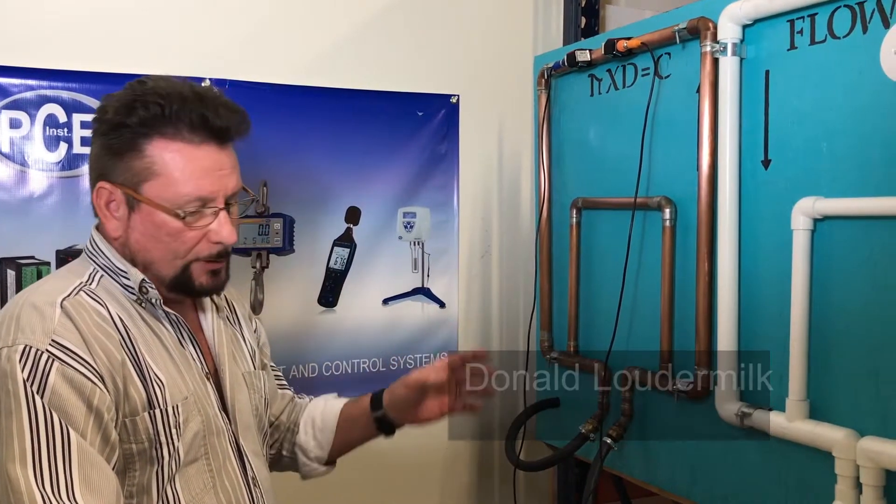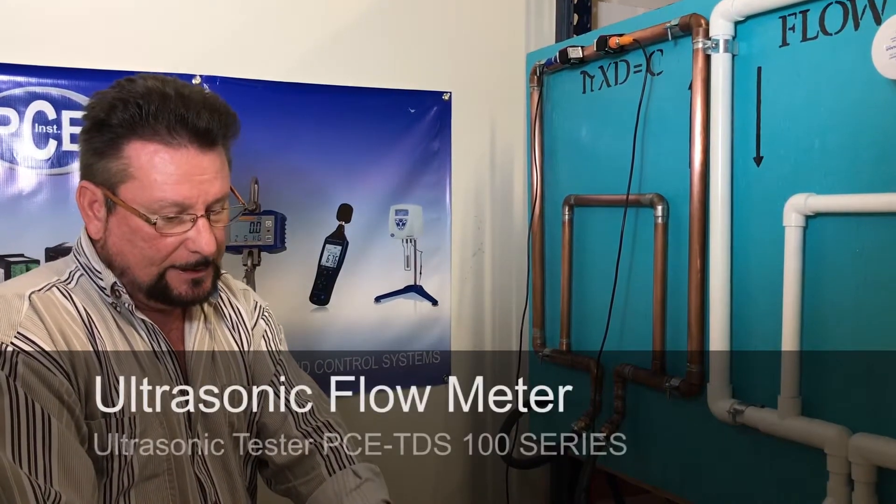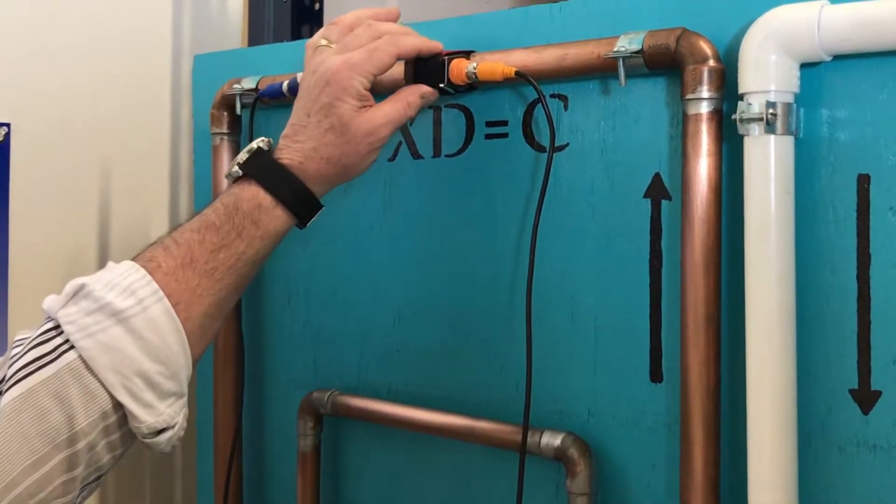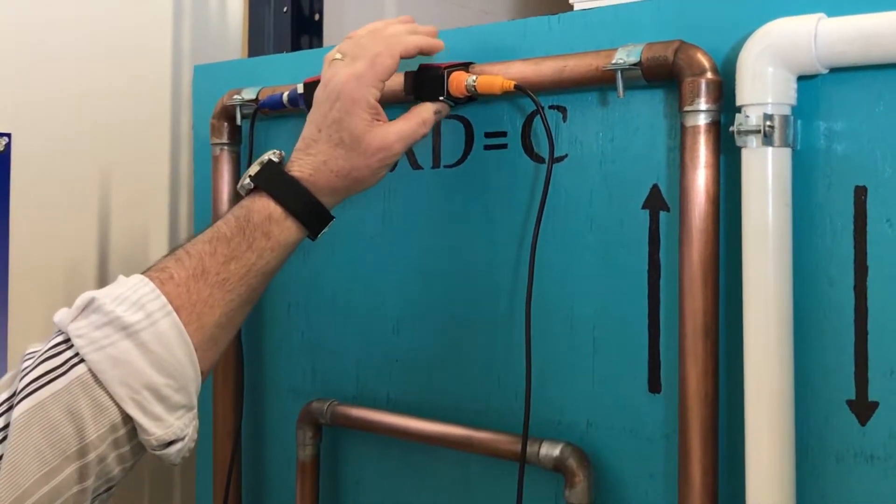These reference pipes are not ideal, but they're okay for showing the operation of the PCE TDS 100 series. When putting the sensors on, it's important to put the upflow sensor on.